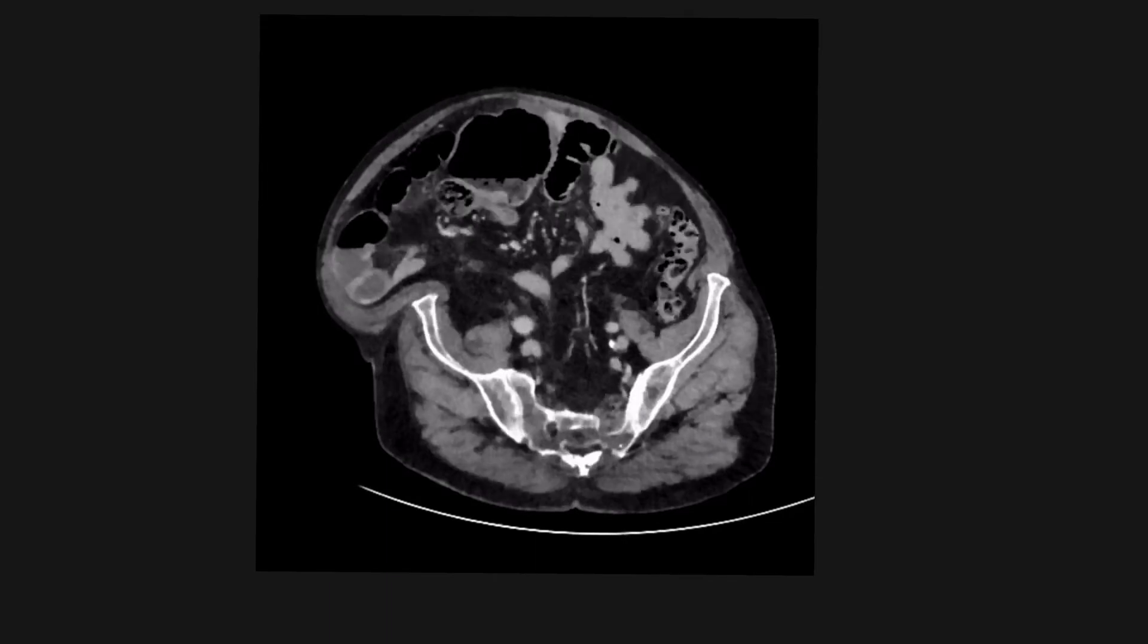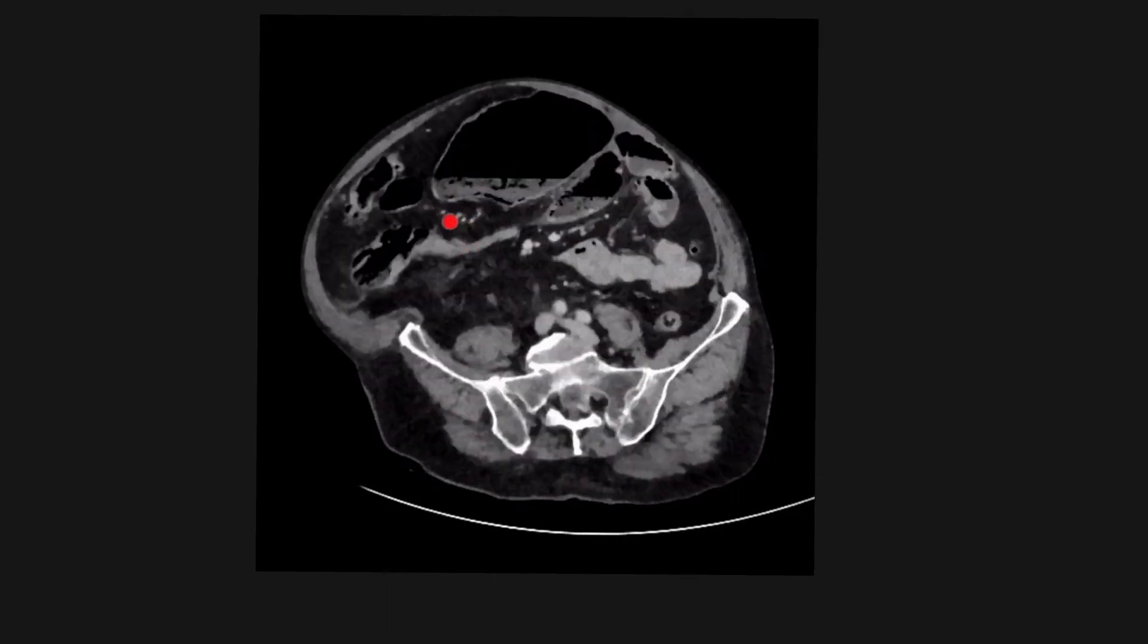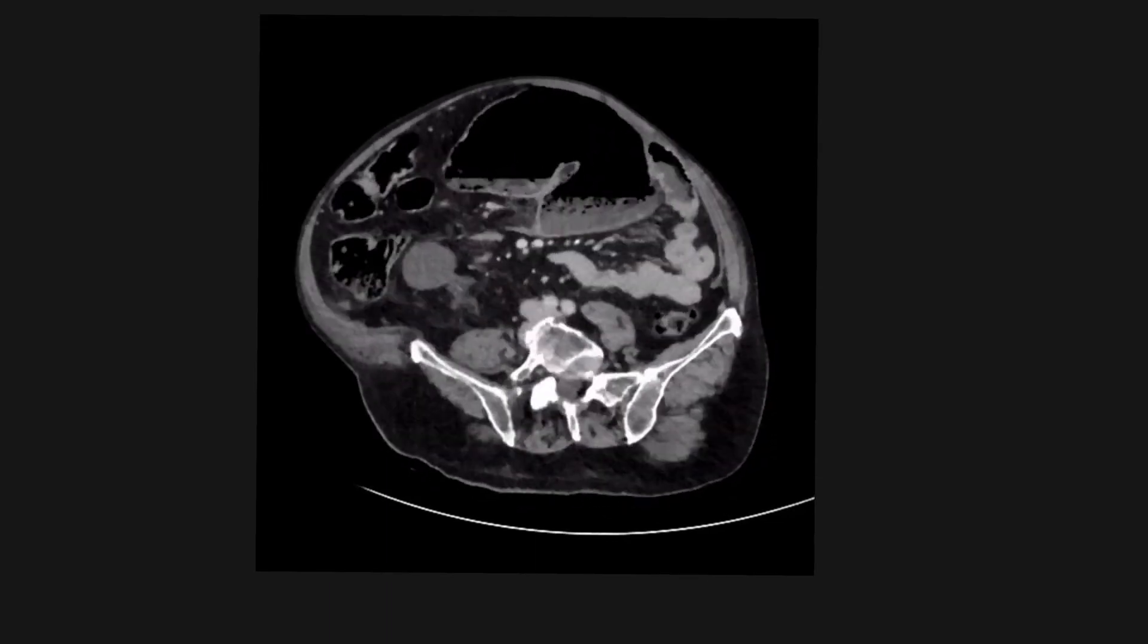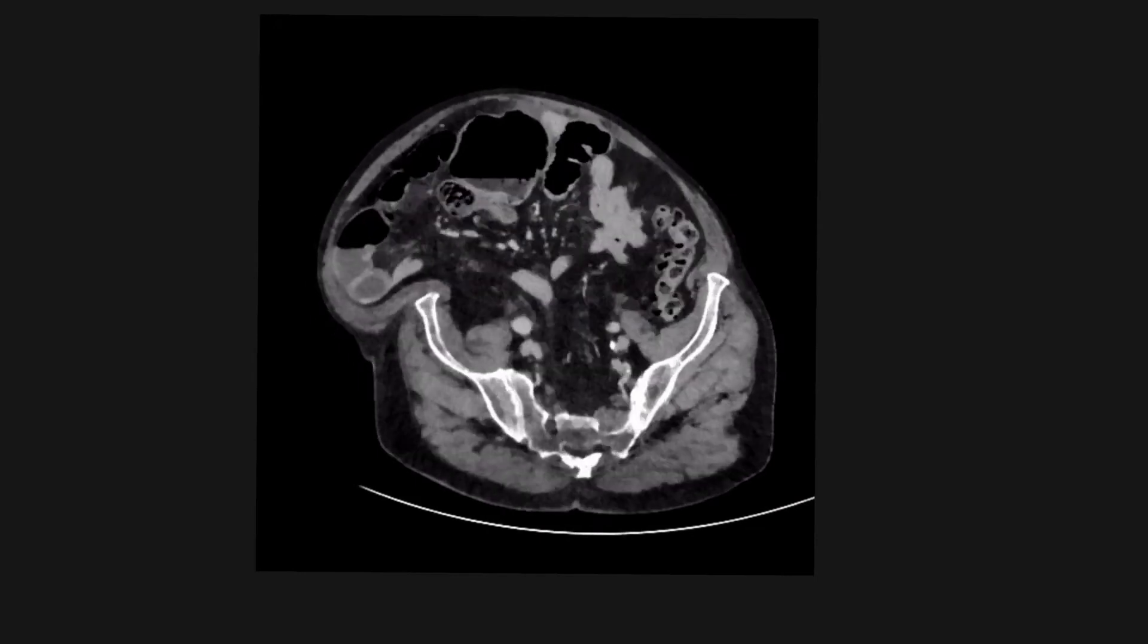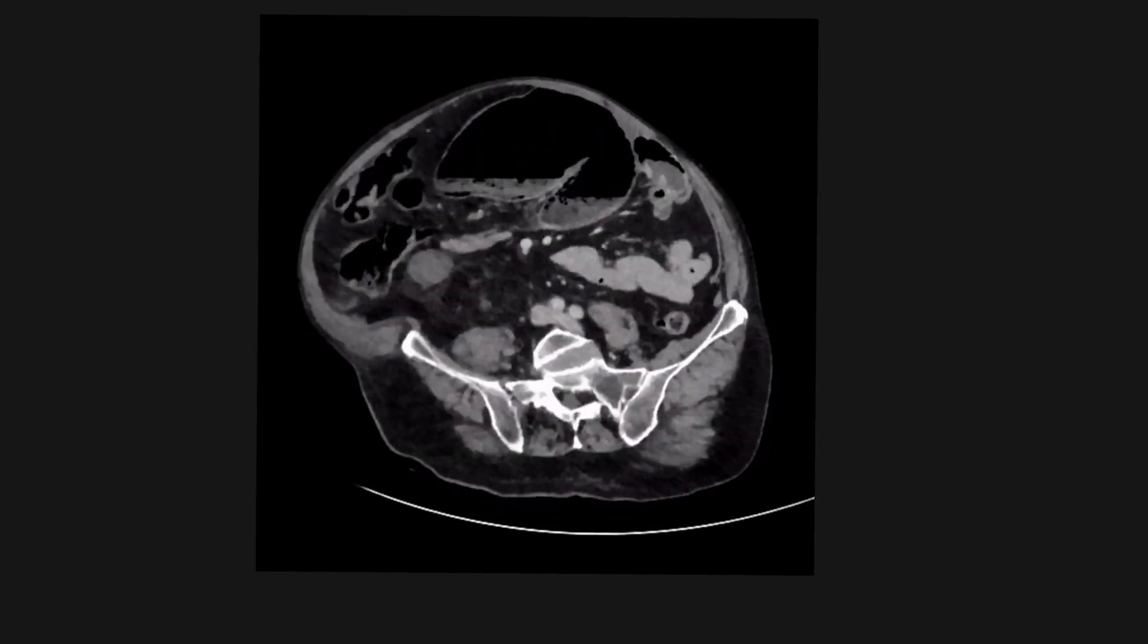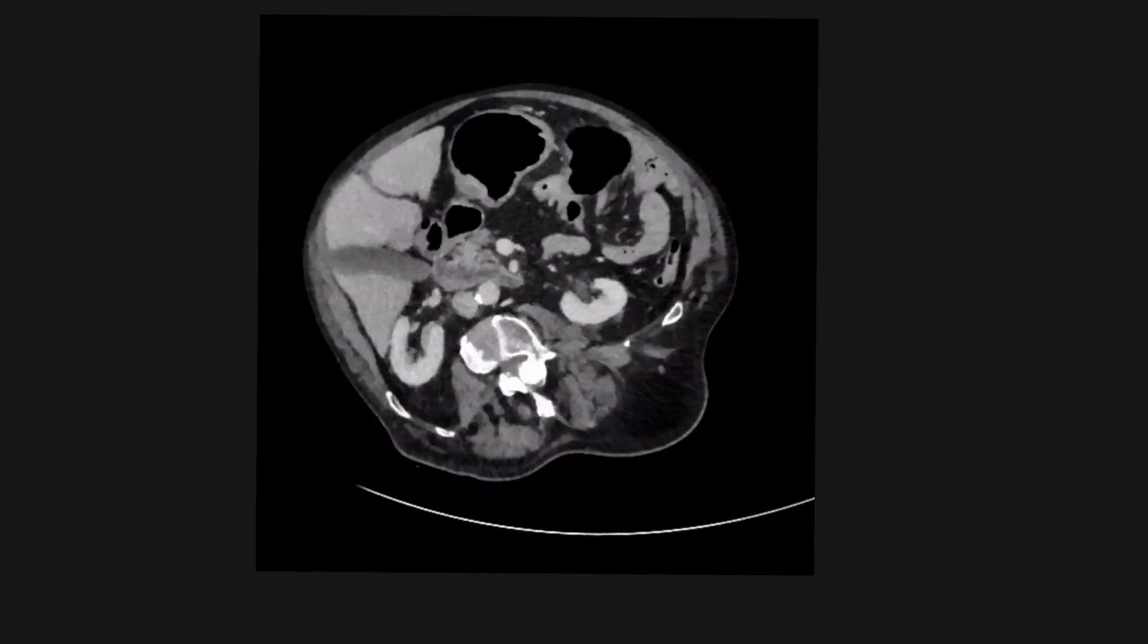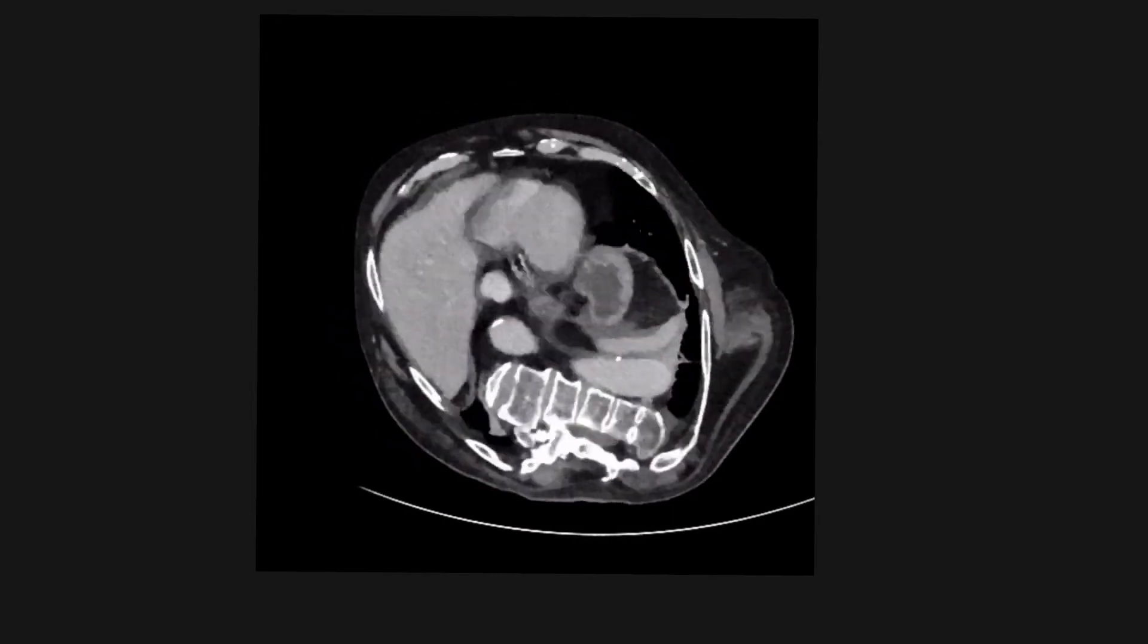We're looking for a twist, and there's the twist. And it's actually in the ascending colon, and there it is again. And this has led to twisting of the mesentery, which has led to dilatation of the cecum, and this is in keeping with a cecal volvulus.